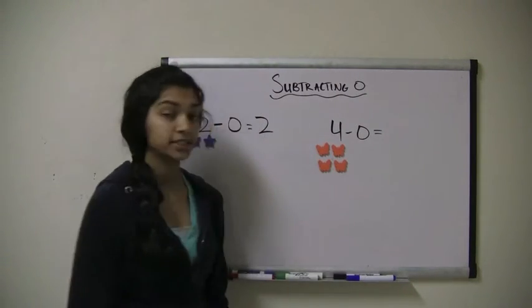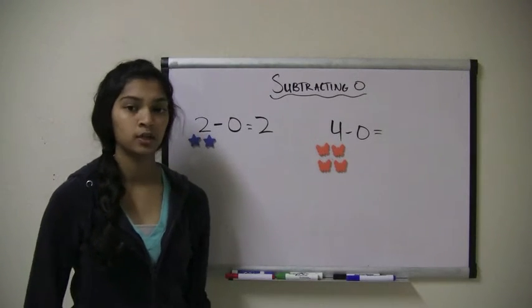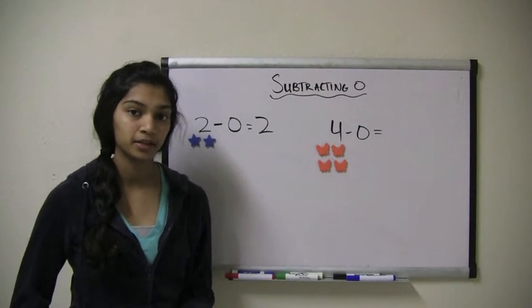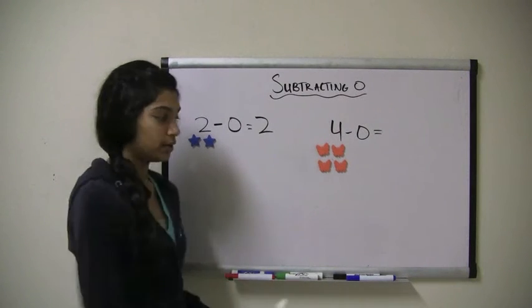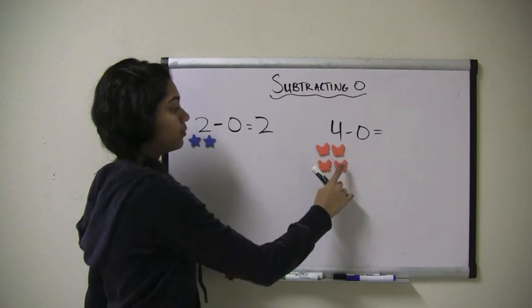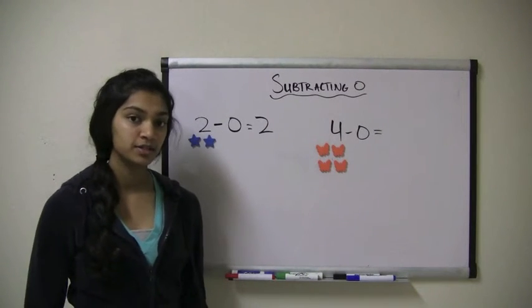I want to take away 0 butterflies, which means I'm not making 4 less by anything or taking anything away from 4. I still have 1, 2, 3, 4 butterflies. 4 minus 0 equals 4.